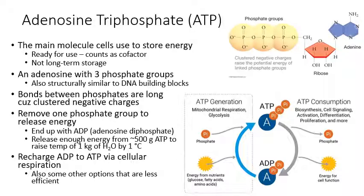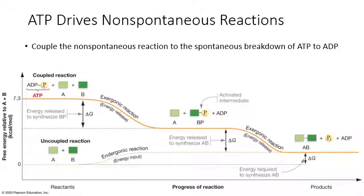We'll go over those other energy sources later in the semester when we get into cellular respiration. This diagram is going over how ATP can actually be used as a source of energy to make sure that non-spontaneous reactions proceed. A non-spontaneous reaction always requires some source of energy in order to go. Your anabolic reactions are all non-spontaneous, so they all need energy to proceed — and usually that energy comes from ATP.